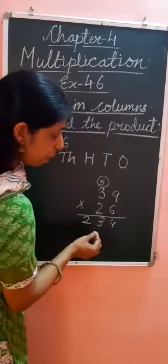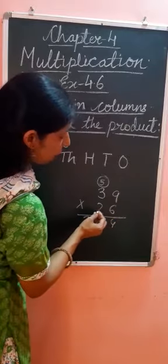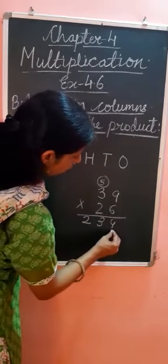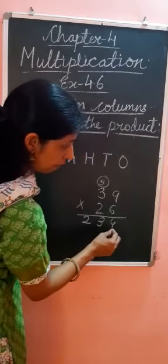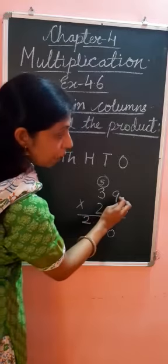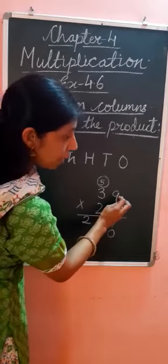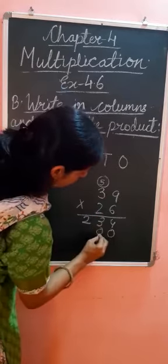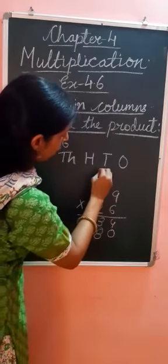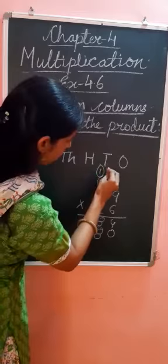Now, children, in the next step, we multiply 39 by 20. So we write 0 in ones place as it is and next, we multiply 2 by 9. So 2 nines are 18. So 8 we write in tens place and 1 carry over in hundreds place.